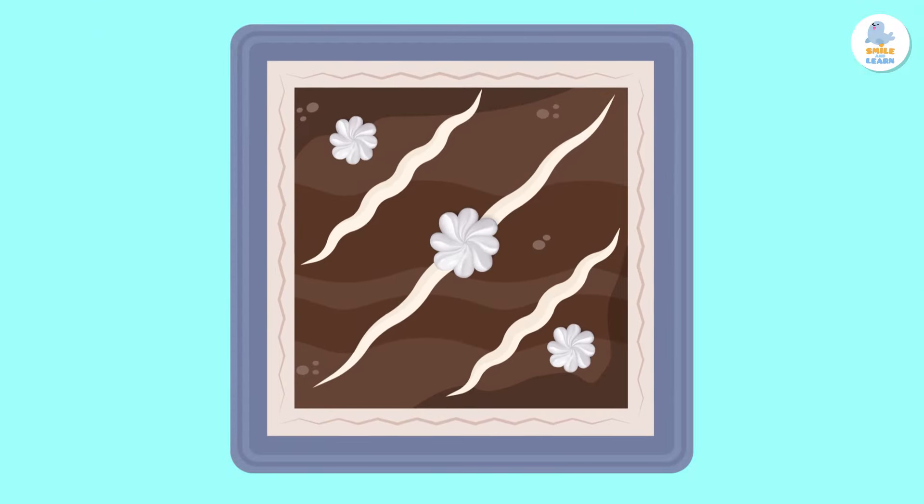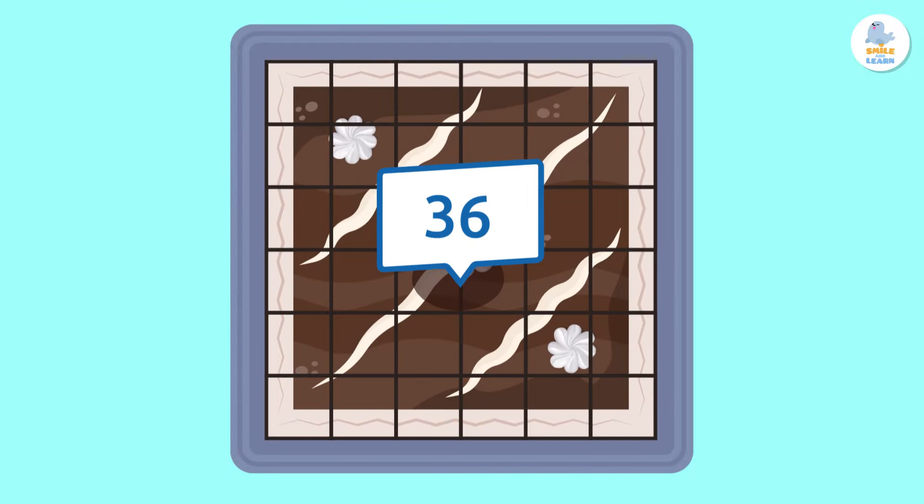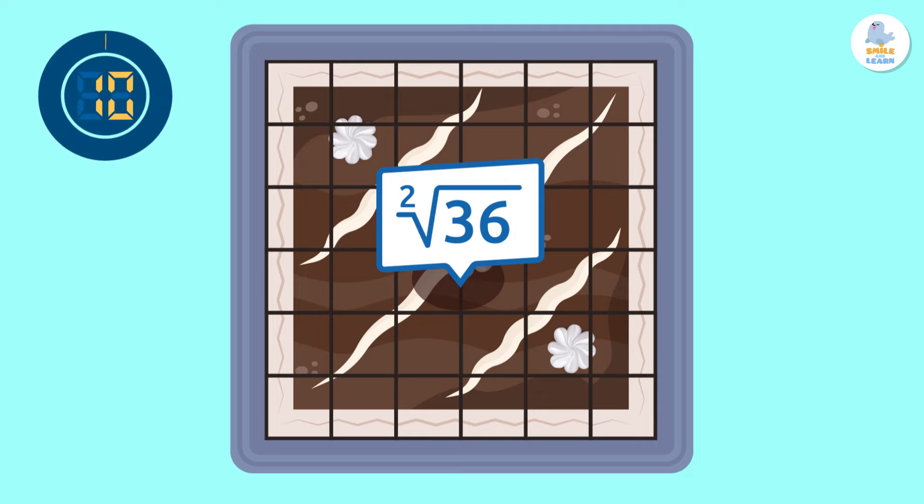Here we have a cake with 36 pieces that are all the same size. How many rows and columns does our cake have? Time's up! Do you have an answer?